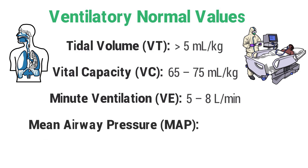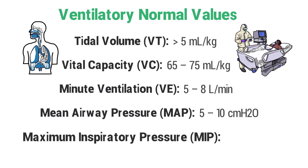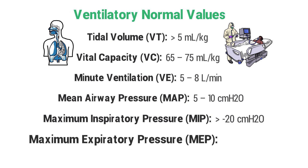MAP, or mean airway pressure, should be between 5 to 10 centimeters of water pressure. The normal MIP, or maximum inspiratory pressure, should be greater than negative 20 centimeters of water pressure. The normal MEP, or maximum expiratory pressure, should be greater than 40 centimeters of water pressure.